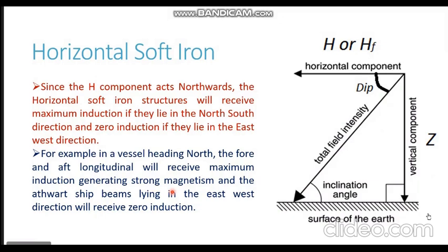With maximum induction, the fore and aft longitudinals have strong magnetism acquired when the ship heads north. If the ship alters course to 090 and moves on an easterly track, the fore and aft longitudinals now lie in the east-west orientation — perpendicular to the north-south earth's magnetic field — so they lose their induction and there will be negligible induced magnetism. The athwartship beams are now in the north-south orientation, perfectly aligned with the earth's magnetic field, generating maximum induction. On a northerly heading: maximum induction on fore and aft longitudinals, zero on athwartship beams.